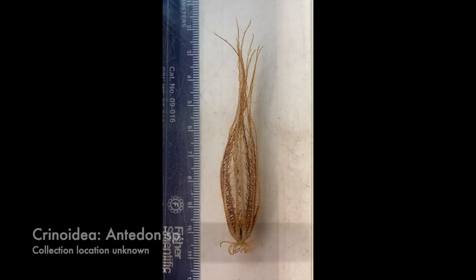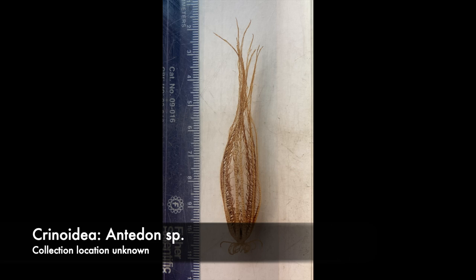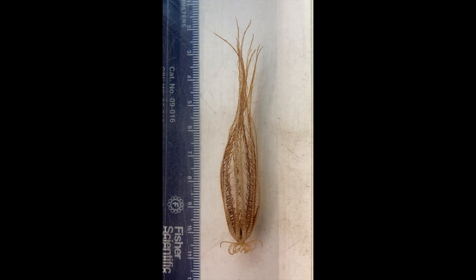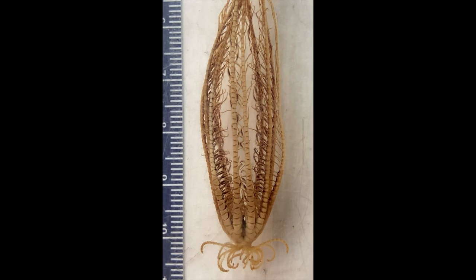Let's start with the crinoid Antedon, a member of a group called the feather stars. They hold on to solid substrates using a cluster of cirri on the aboral side of the body, with the oral end facing up. The mouth is in the center of a circle of arms; each arm has side branches called pinnules, and tube feet extend from those. The tube feet are sticky and capture particles from seawater, passing them down to the mouth. The water vascular system is normal except crinoids lack an external madriporite — the stone canal opens into the perivisceral coelom.